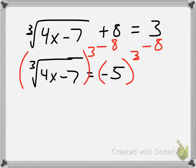What that does on the left side is it cancels my radical out. So simply, I'm left with 4x minus 7.